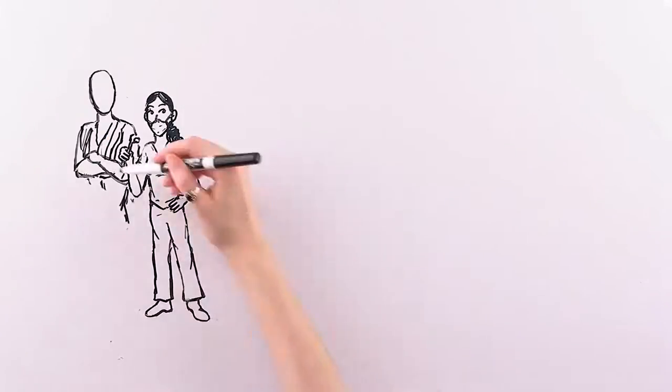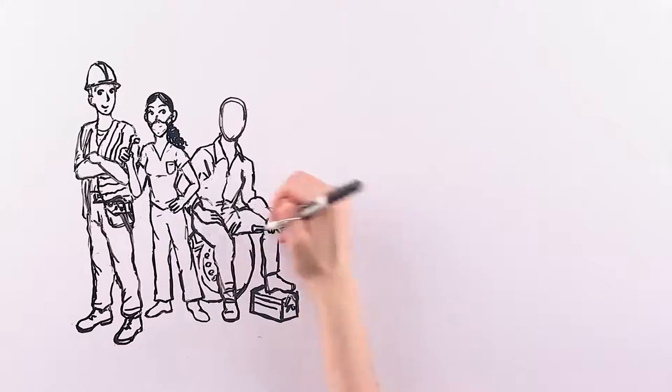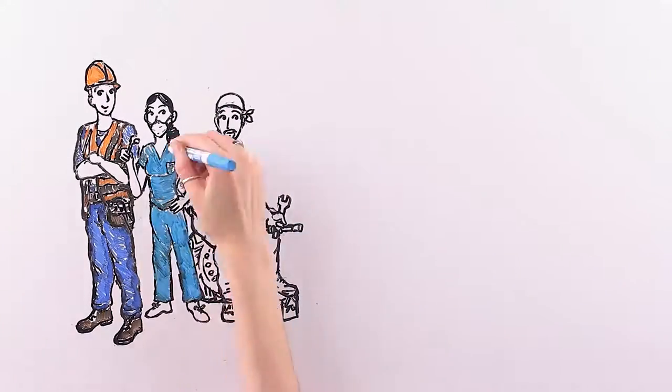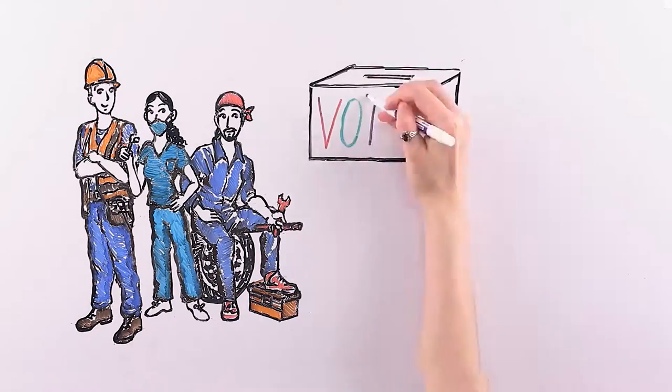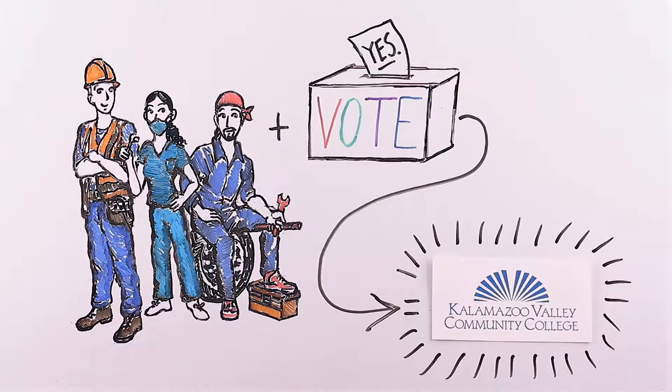In 1966, state and local studies indicated a need for vocational education and to expand access to college in West Michigan. The community voted and Kalamazoo Valley Community College was established.